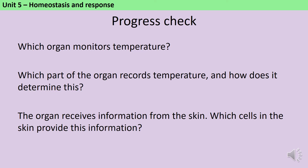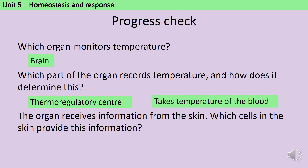Temperature is monitored by the brain, and the part of the brain that does this is the thermoregulatory center — what it does is take the temperature of the blood. The cells in the skin that provide information about temperature are receptor cells.